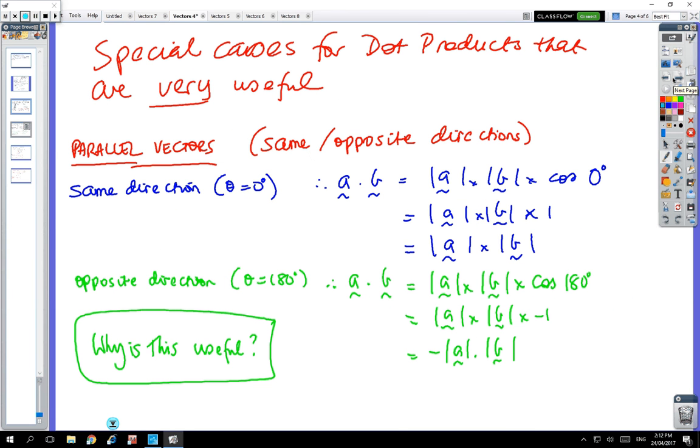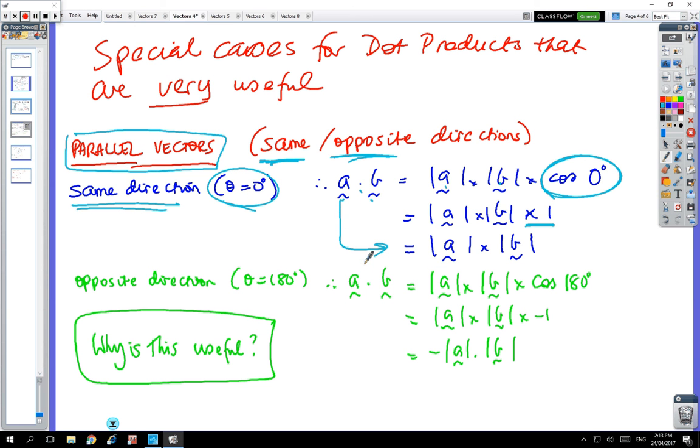Special cases for dot products that can be useful. If I've got parallel vectors, parallel could be in the same direction or the opposite direction. If they're in the same direction, there's no angle between them. We've got a dot b equals magnitude of a times magnitude of b times cos θ. Cos of zero is one, so we end up with a dot b equals magnitude of a times magnitude of b. If they're going in opposite direction, the angle between is 180 degrees. A dot b is times cos 180, so you get negative of a and b.